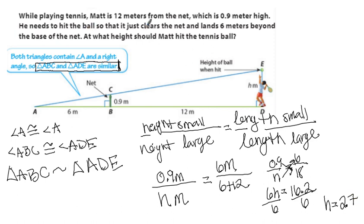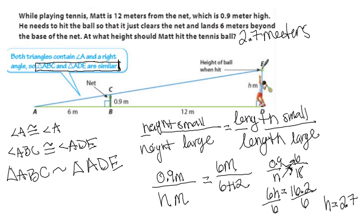So at what height should Matt hit the ball? 2 and 7 tenths meters. He should hit it when the ball is at 2.7 meters, and then it will perfectly cross over the net and land 6 meters beyond.